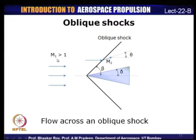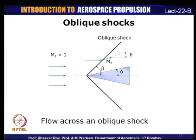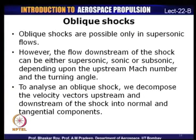Downstream Mach number M₂ will be less than M₁, but it need not necessarily be subsonic. Unlike a normal shock where the downstream Mach number is always less than 1, in an oblique shock the downstream Mach number may remain supersonic (but less than M₁), or it could become sonic or subsonic, depending upon the upstream Mach number and the deflection angles.